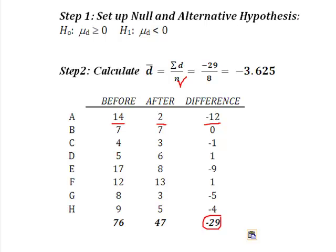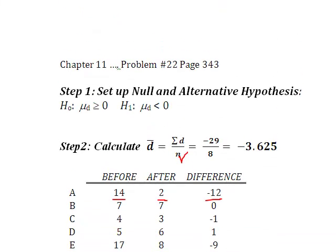I simply took the before minus after, I got the difference, I did that all the way down, I got a negative 29, divided it by my N of 8, because I had A, B, C, D, E, F, G, H, which was 8 observations, or 8 areas, and it gave me a D̄ value of negative 3.625, which is the second step in this process.